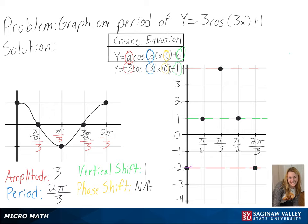And with that, we have graphed one period of y equals negative 3 cosine of 3x plus 1.